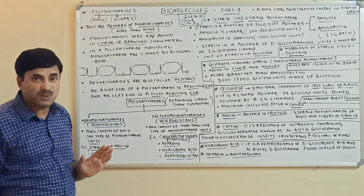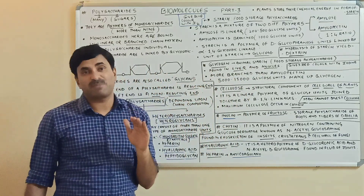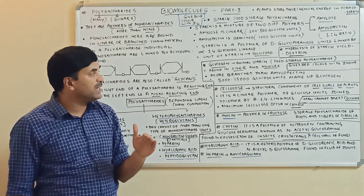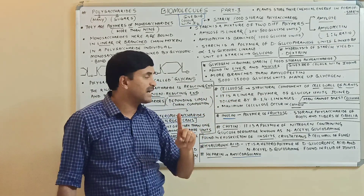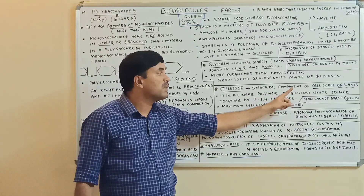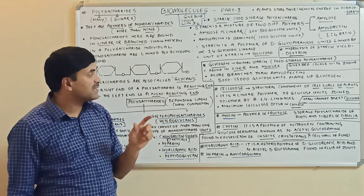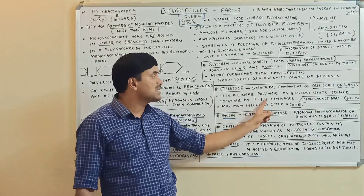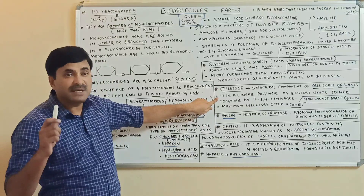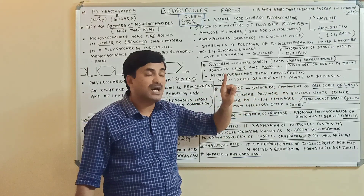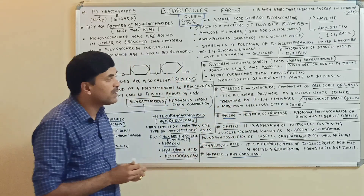The third homopolysaccharide is cellulose. It is the main structural component of the cell wall of plants. Cellulose is a linear polymer of glucose units joined together by beta-1,4 linkage.